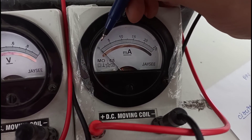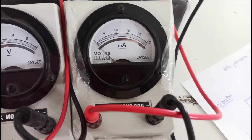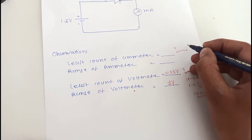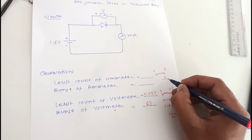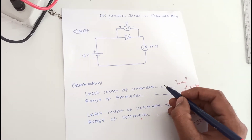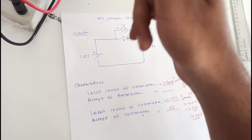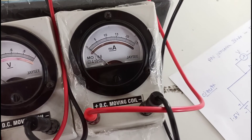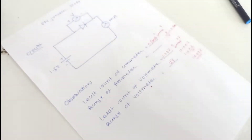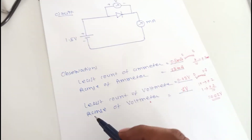To find the least count of the ammeter: there are 10 divisions between 0 to 5 mA, so we can write 5 by 10 is the least count. The value of 1 division is 5 by 10, which means 0.5 mA. So the least count of the ammeter is 0.5 mA. The range means the maximum current capacity of the ammeter, which is 25 mA. These are the observations which are done.